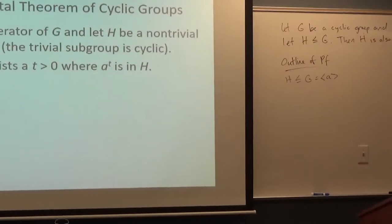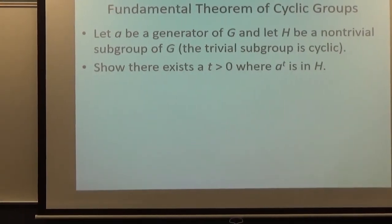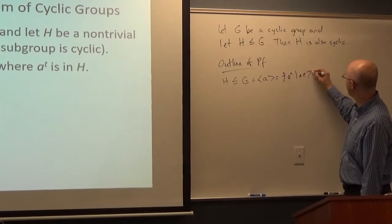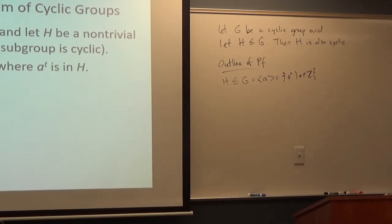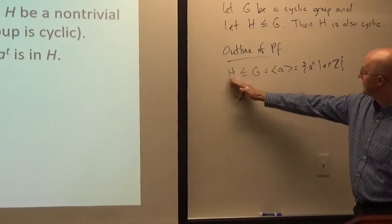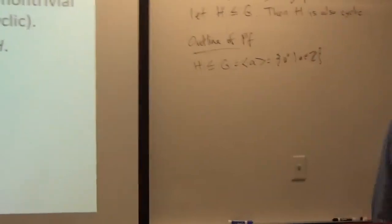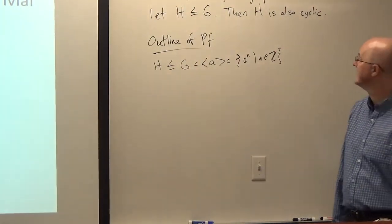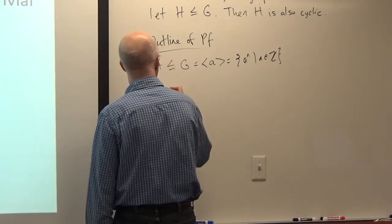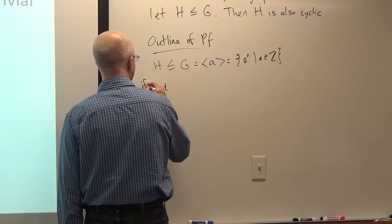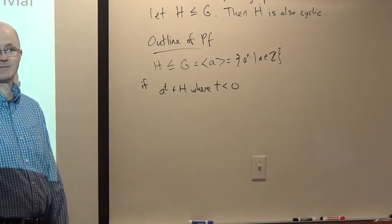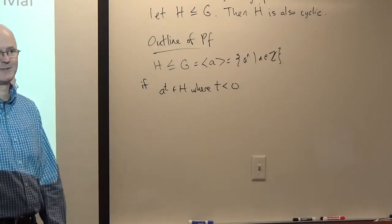The first step is to show there's a positive power of A that's in H. Since G is generated by A—defined as the set of all powers of A as those powers range over the integers, both positive and negative—all elements of H are powers of A, but they could theoretically be just negative powers. If A^t is in H where t is negative, then by closure A^(−t), where −t is positive, would also be in H.